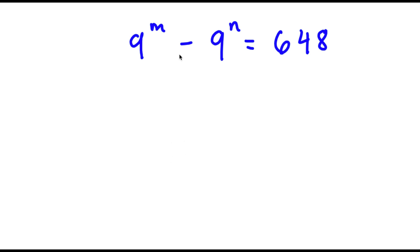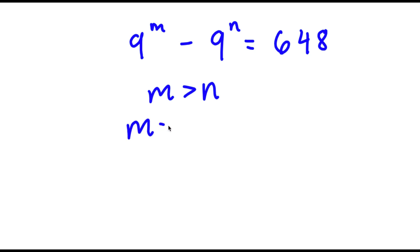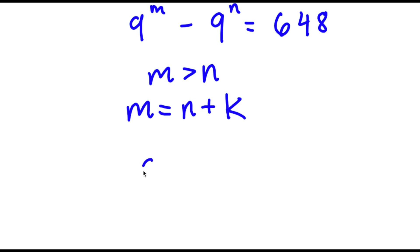In this problem, I have 9 to the power of m minus 9 to the power of n is equal to 648. Based on first glance, we can tell that m is greater than n because the result is a positive number and the bases are the same. So now we can say that m is equal to n plus some number k, and I'm going to replace m with n plus k. So now I have 9 to the power of n plus k minus 9 to the power of n is equal to 648.